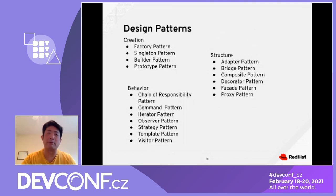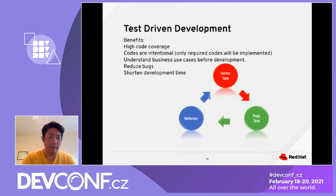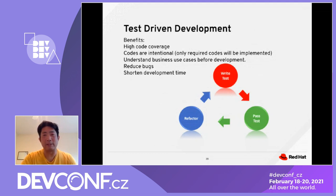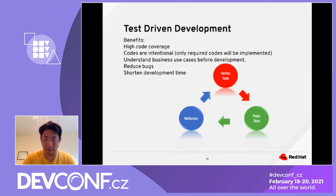In the Java world, remember we have different types of design patterns that we can leverage for coding quality — three different verticals: creational, behavioral, and structural. Each one has a specific design pattern you could follow to improve your Java code. I personally also like TDD a lot because it helps improve code quality. The benefits of TDD include high code coverage — you write the unit test first before implementing your code. All code is intentional, so only required code gets checked in. You understand the business use cases before starting development, which reduces bugs in production and shortens the development lifecycle. Follow the TDD triangle: write your test, change your code to make the test pass, then refactor.